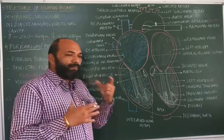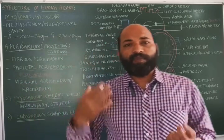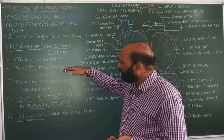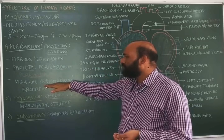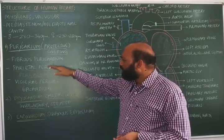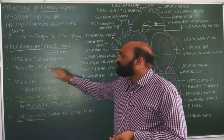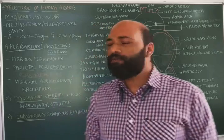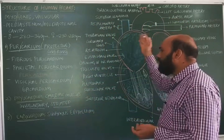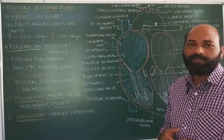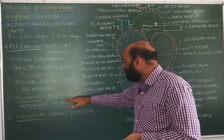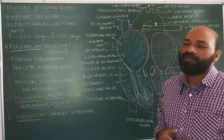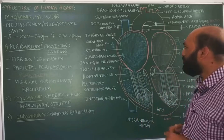Within the pericardium there is further differentiation: the outer layer is called the parietal pericardium, the inner layer is called the visceral pericardium, and in between is the pericardial fluid. That covers the layers of the heart — the protective pericardium, the muscular myocardium, and the innermost endocardium with simple squamous epithelium.